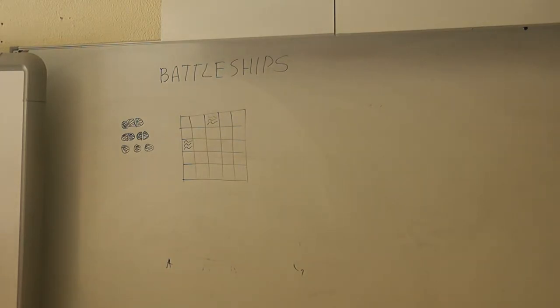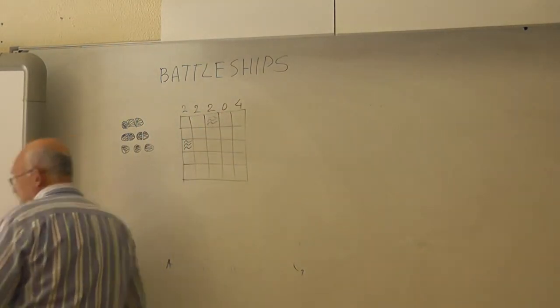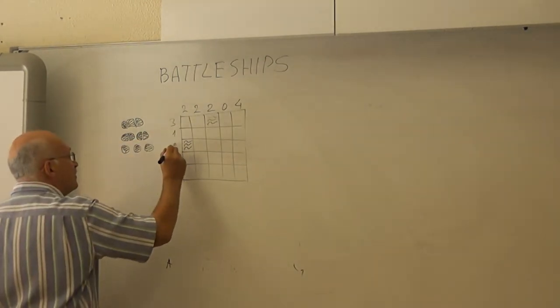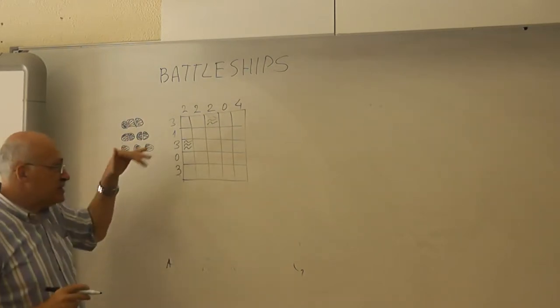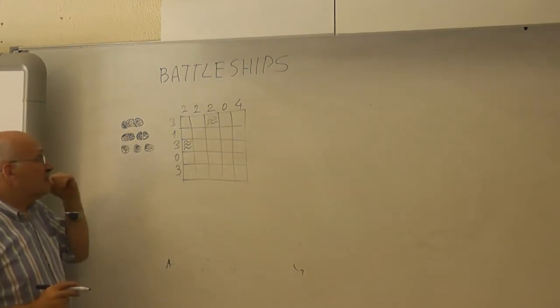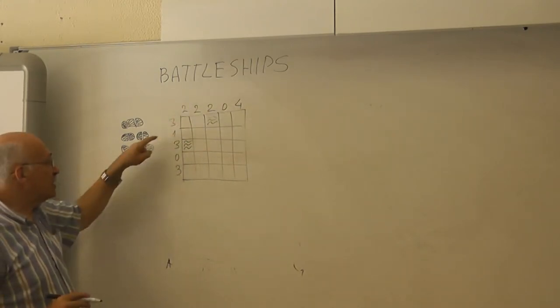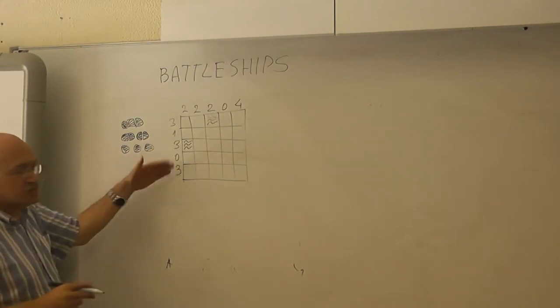What is that? 2, 0, 4, 2, 2, 0, 4. And 3, 1, 3, 0, 3. So this means that, for example, in this column there are only two squares taken by the ships.